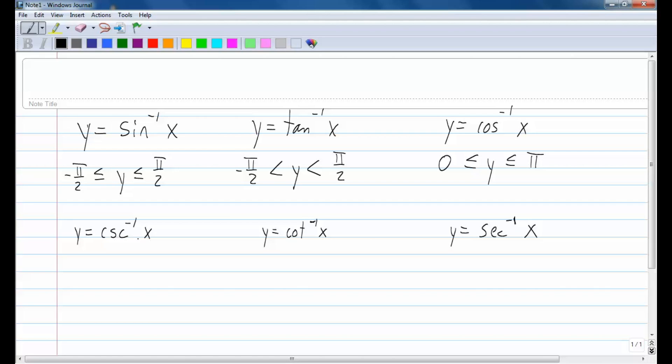Inverse cosecant is defined between negative pi over 2 and pi over 2. Now there is one exception because we can't take the cosecant of a place where sine would give us a zero, right?